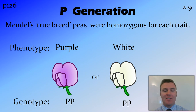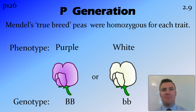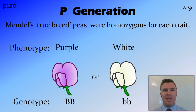Now that we've said that we're going to use peas, you can probably notice they're a little bit confusing on the screen — it's hard to tell the difference between a big P and a little p. So instead I'm going to use the letter B. Usually you would use P, but to avoid confusion I'm going to use big B, big B and little b, little b as the genotypes of my two pea plants.